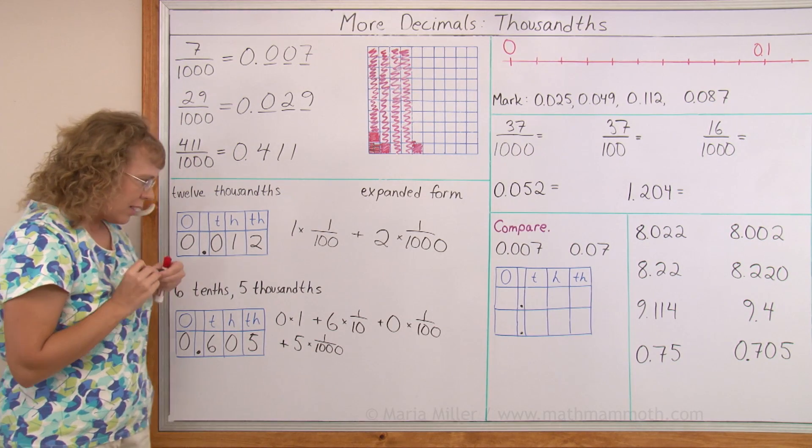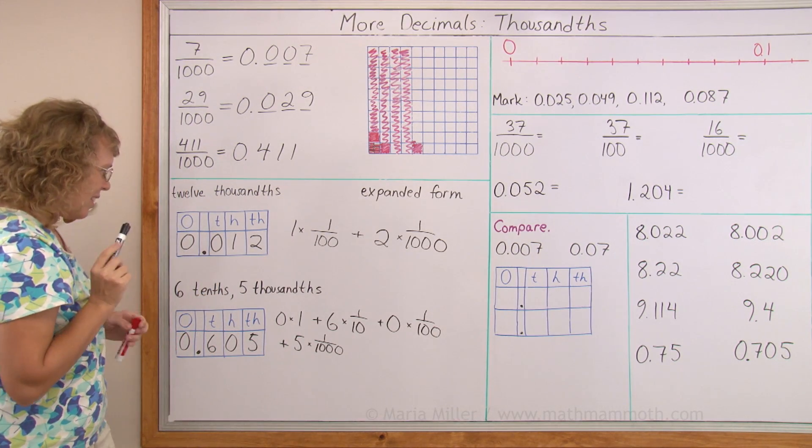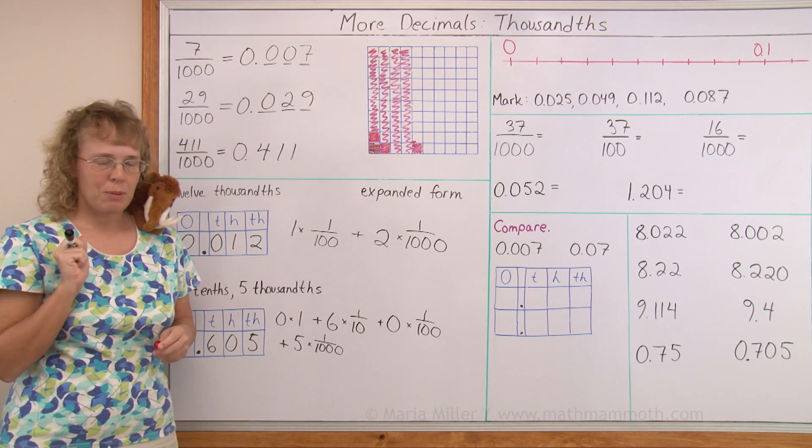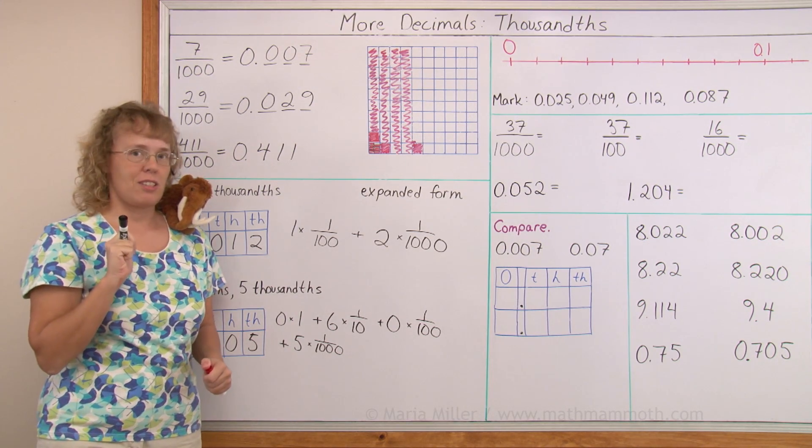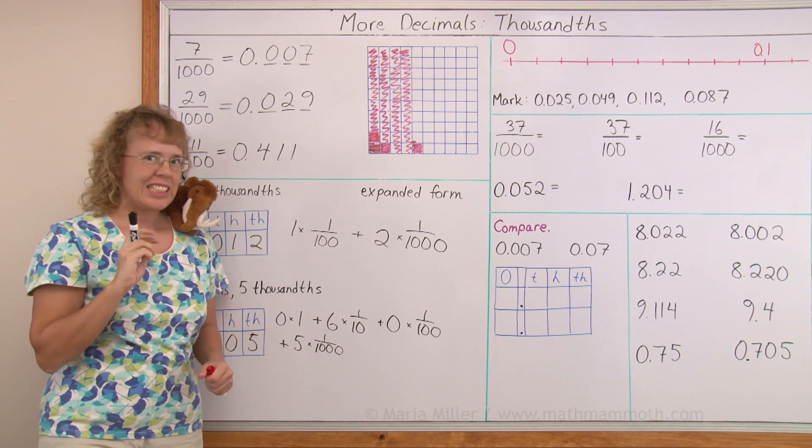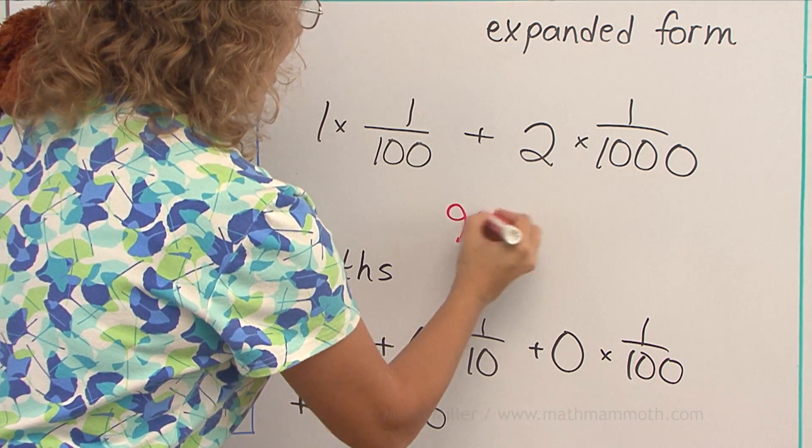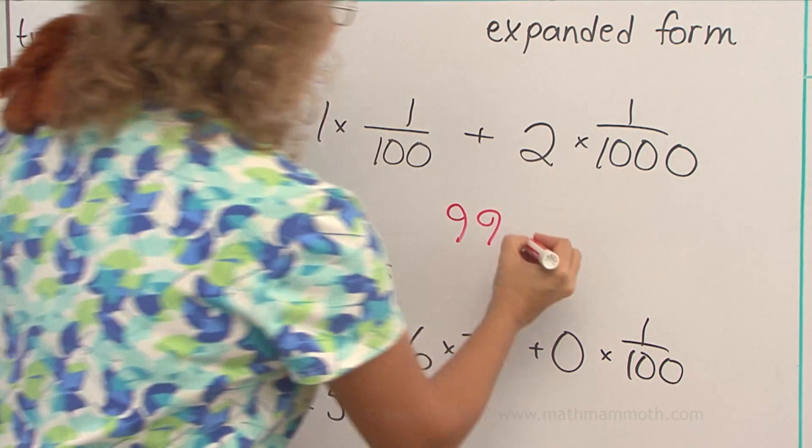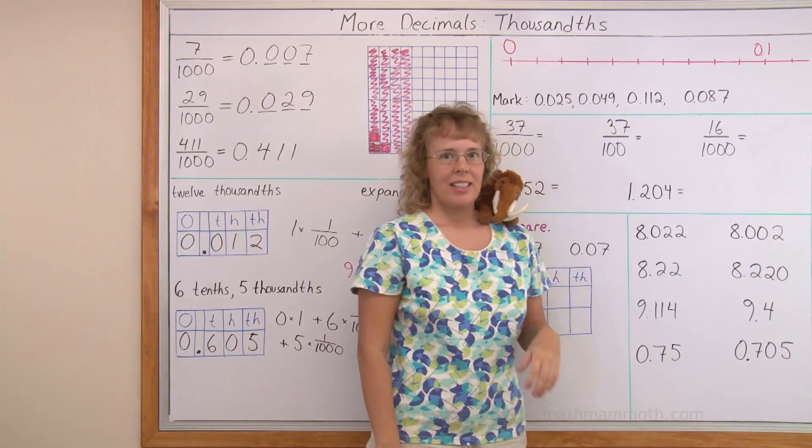What's that, Mathi? Oh, Mathi has a bonus problem for you. Write as a decimal, 99 and 99 thousandths, got that? Write as a decimal. You should get 99 and 99 thousandths, like that.